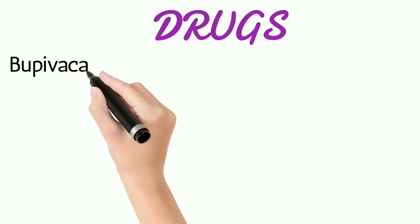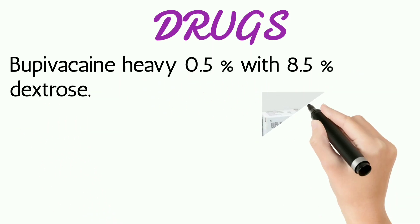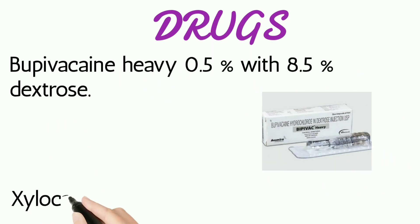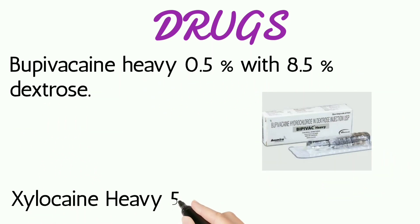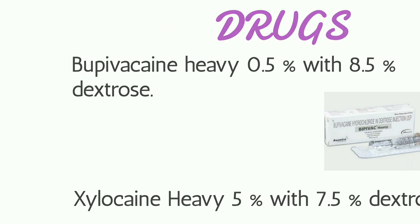Drugs used in spinal anesthesia: Bupivacaine heavy 0.5% with 8.5% dextrose, and Xylocaine heavy 5% with 7.5% dextrose.